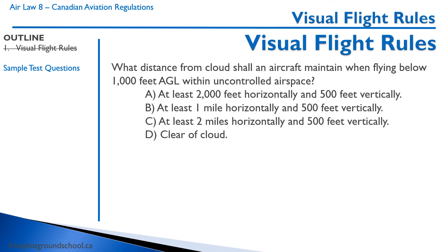What distance from cloud shall an aircraft maintain when flying below 1,000 feet AGL in uncontrolled airspace? Options: A, at least 2,000 feet horizontally and 500 feet vertically — no, that applies above 1,000 feet; B, at least one mile horizontally and 500 feet vertically — no, that's a control zone; C, at least two miles horizontally and 500 feet vertically — no. The correct answer is D: clear of cloud. Below 1,000 feet in uncontrolled airspace, you simply have to be clear of cloud.